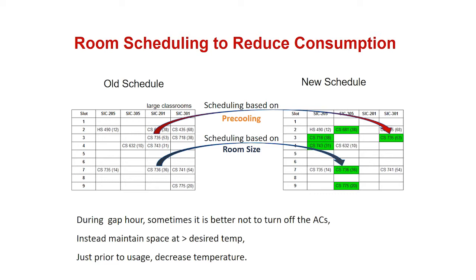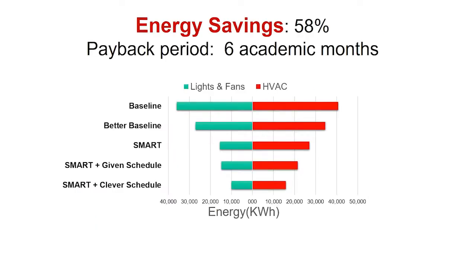And we also take into account something called a gap hour. So that rather than turning off all the ACs, we maintain the temperature slightly higher than desired. And when the usage happens, just prior to that, we decrease the temperature. So that way you capitalize on the pre-cooled area, but not consume all the energy required to maintain at that temperature.